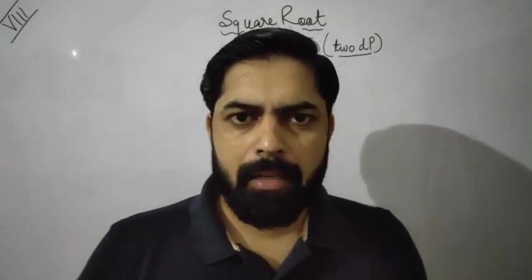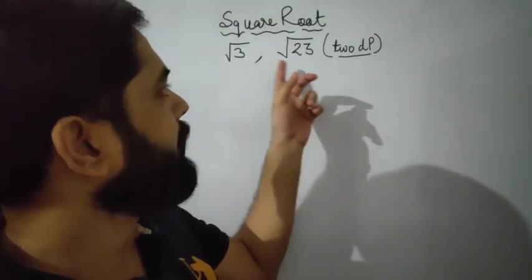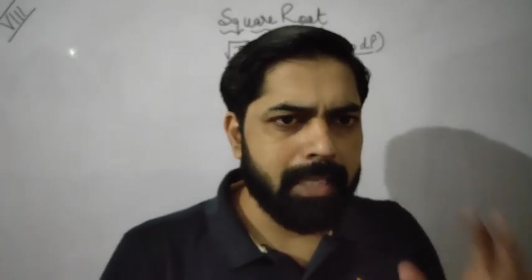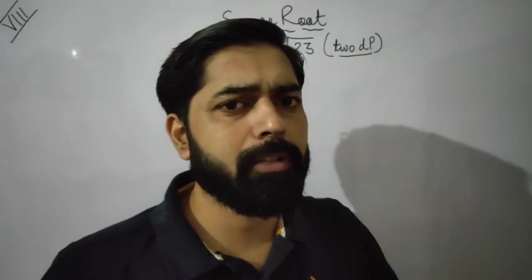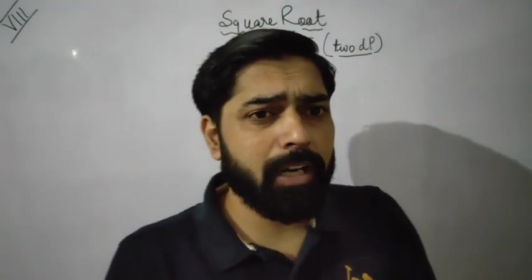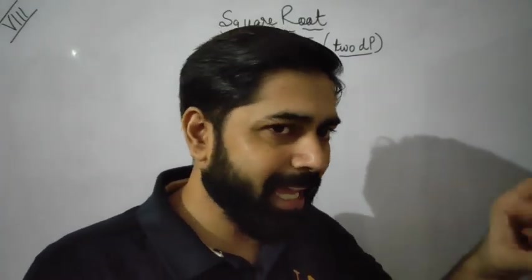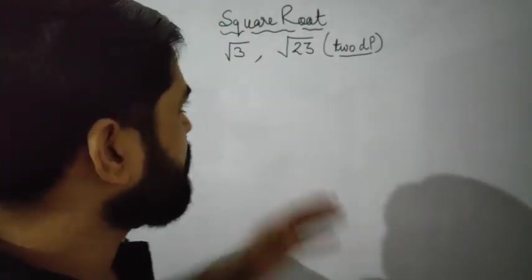Welcome back to Math Online Class. In this video, I am going to tell you how to find the square root of 3 and under root 3 up to 2 decimal places. We are finding the square root of non-perfect square numbers. When we find the square root of a non-perfect square number, we use decimal places in the answer because these are non-perfect squares and we cannot find a whole number answer.